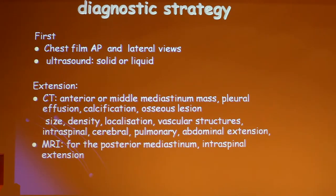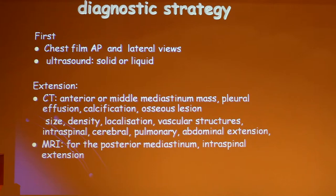We can see the size, the density, the vascular structures, the extension — cerebral, pulmonary, abdominal, and transpinal extension. But MRI is better for transpinal extension. We do MRI for the posterior mediastinum.